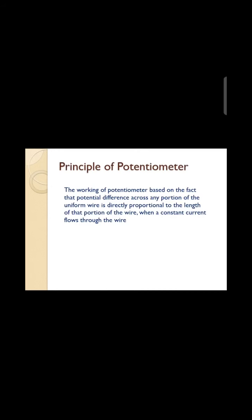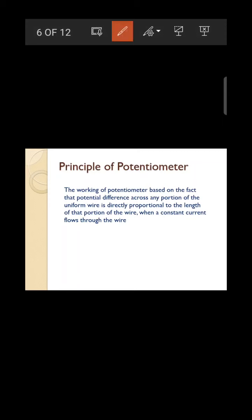The principle of the potentiometer: the potential drop across any portion of the wire is directly proportional to the length of that wire — provided a constant current passes through a uniform wire. That is, V ∝ L (under constant current in a uniform wire).